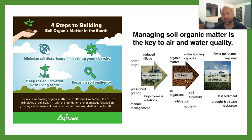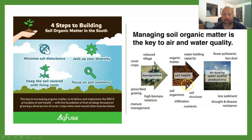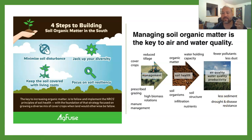Managing soil organic matter is the key to air and water quality. If we work on cover crops, reduced tillage, prescribed grazing, manure management, and high biomass rotations, that gets us to good soil health: high organic matter, high water holding capacity, large amounts of organisms, good infiltration, high amounts of nutrients, and good structure — leading to less sediment and erosion, more drought and disease resistance, and fewer pollutants and less dust.